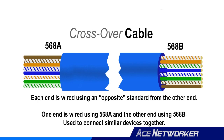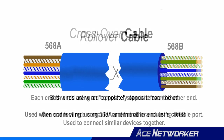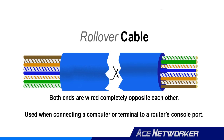The next type is called a crossover cable. A crossover cable is created when both ends of the same cable are wired using two different standards — one end with 568A and the other with 568B. Crossover cables are used to connect two similar devices together. A good example is connecting two computers directly to each other to form their own personal network, without a hub or switch in between.